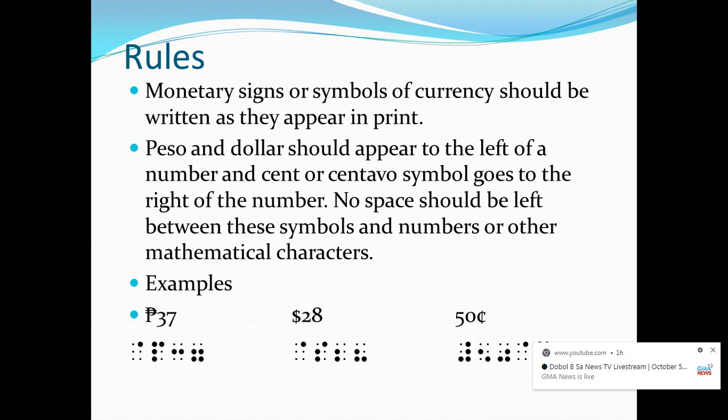And finally, we have 50 cents. The cent sign should be written after the digits or after the number. So we write the numeric indicator — that's dots 3, 4, 5, and 6 — then we write digits 5 and 0, and then dot 4 and letter C.